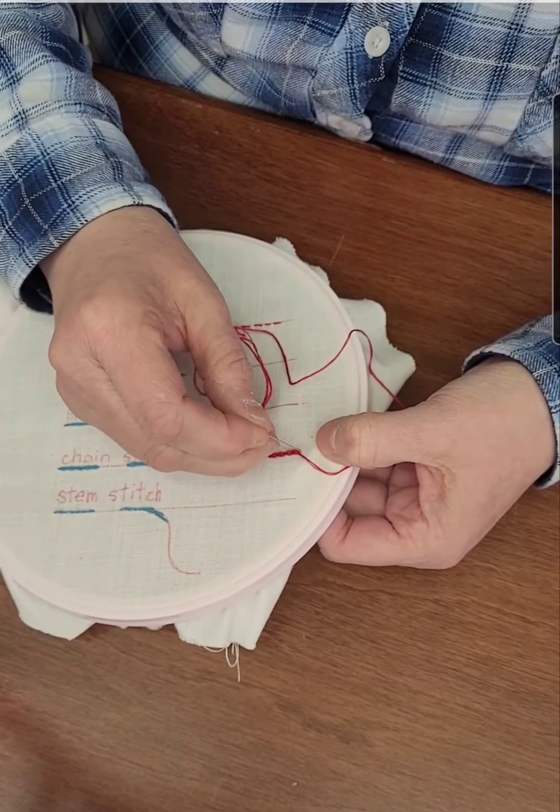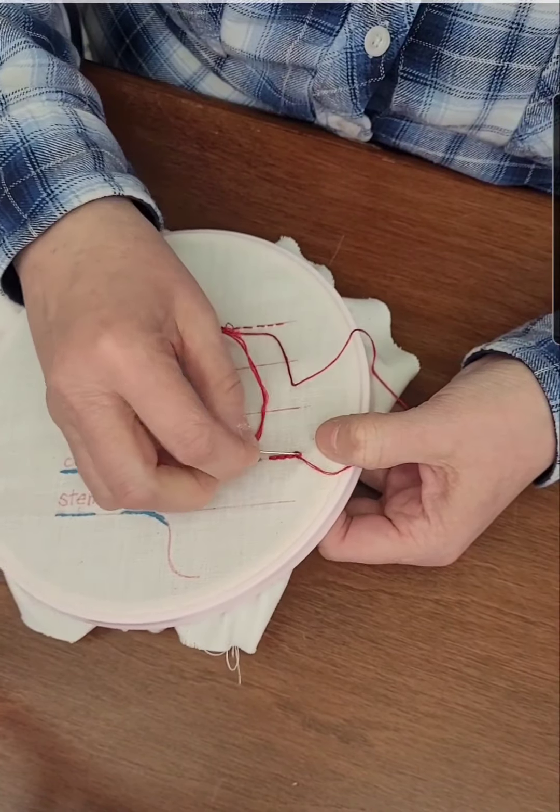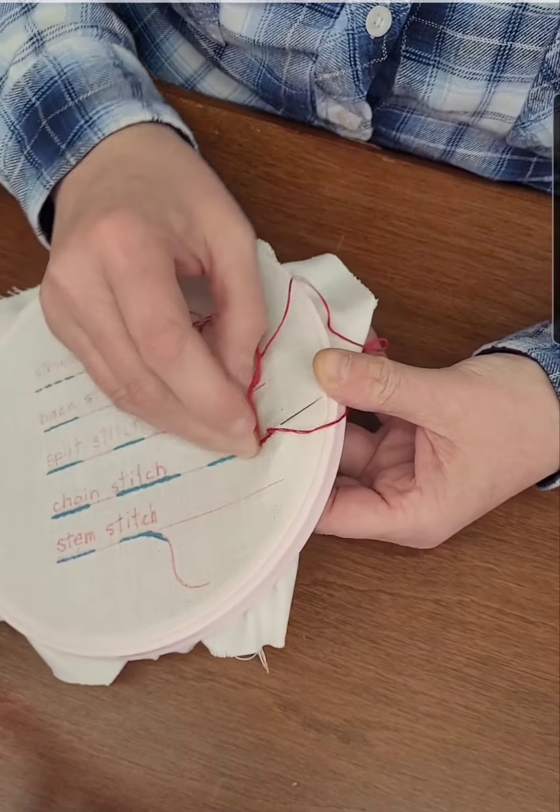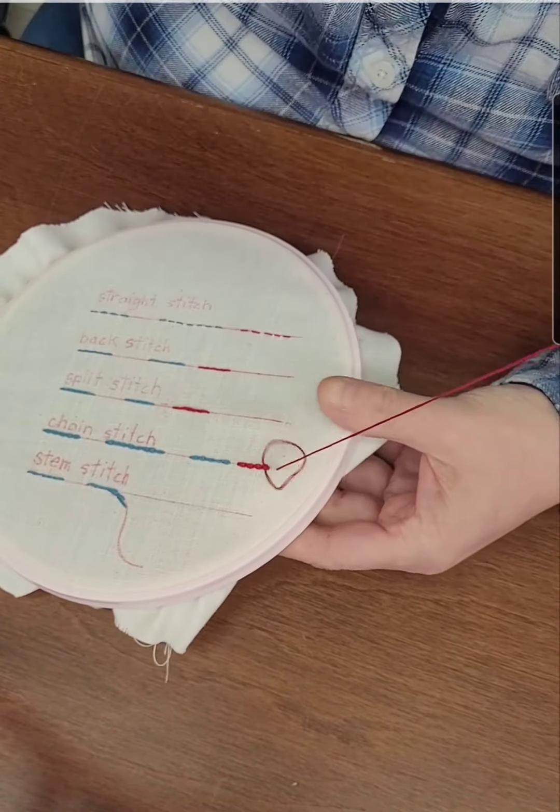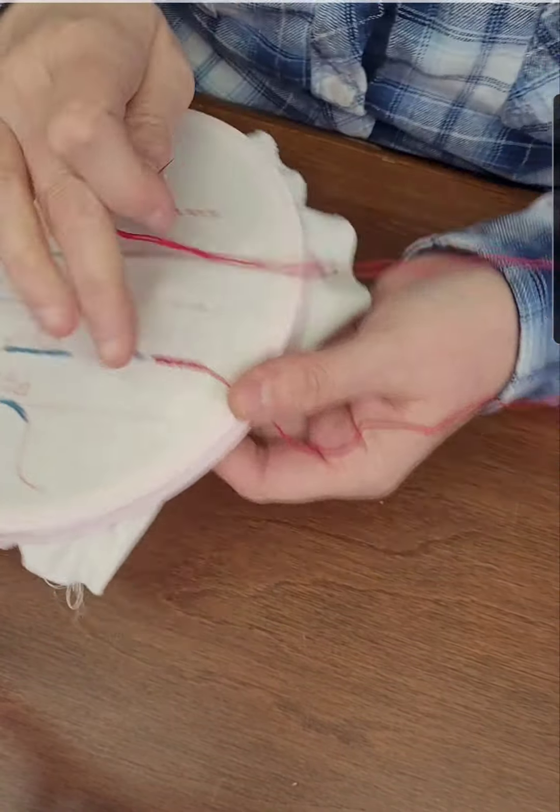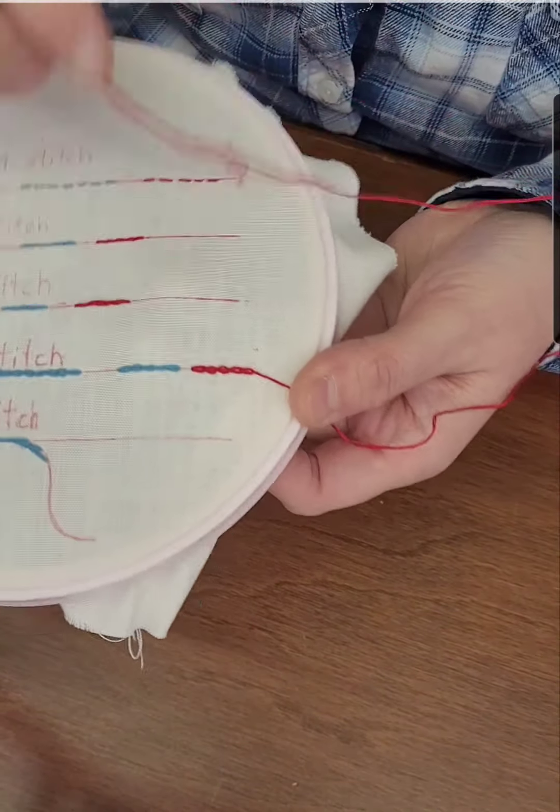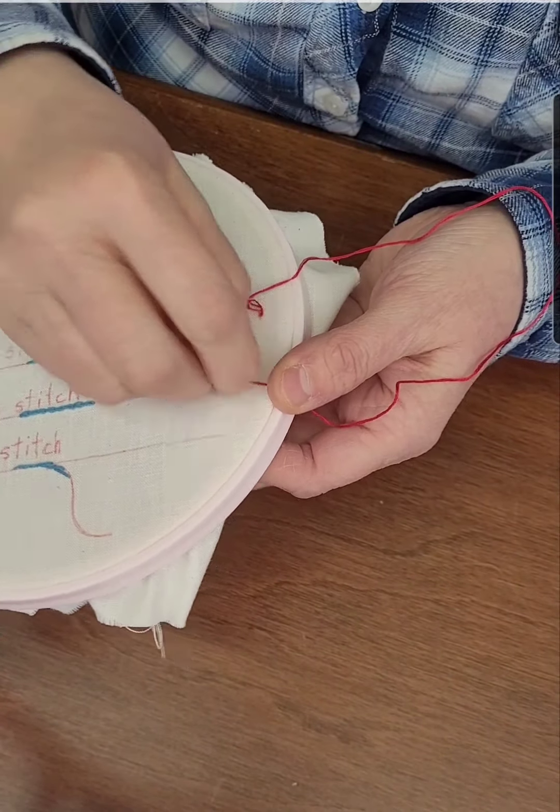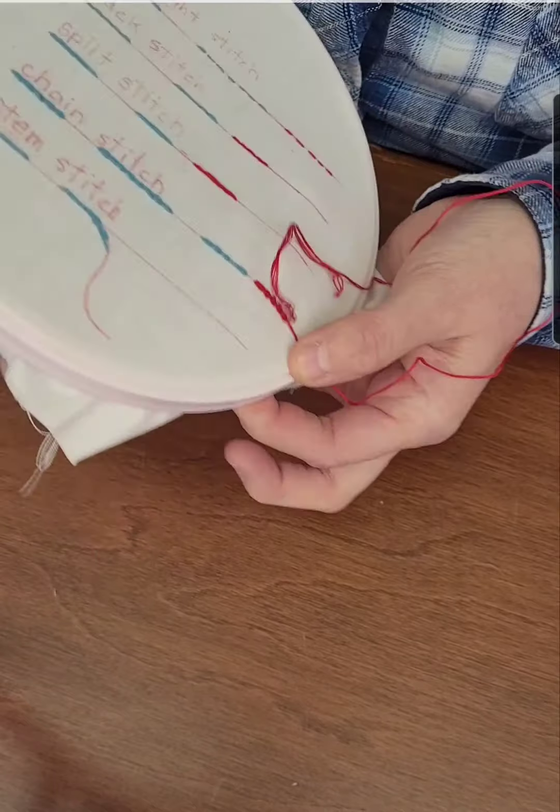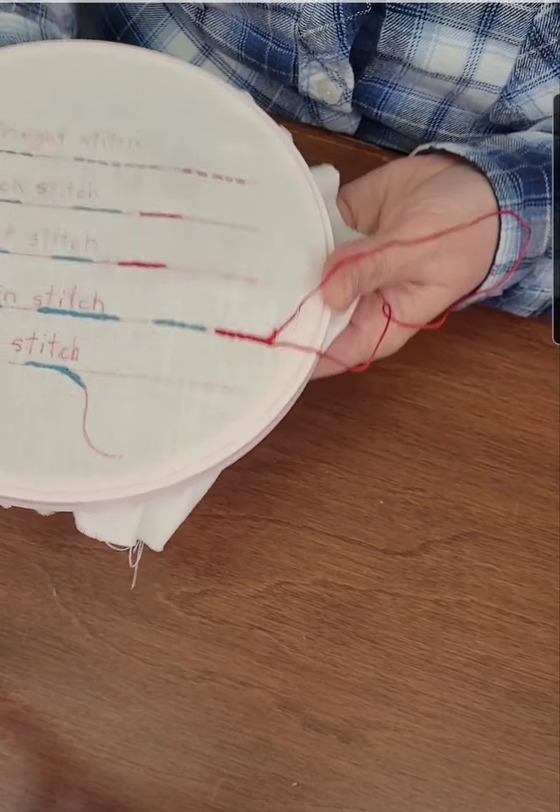So the chain stitch is a nice stitch for doing as an outline, as a border perhaps. And don't forget to play with some colors. Okay so I'm going to snip the threads at the back and we'll do the last.